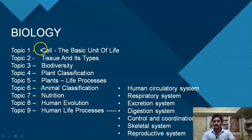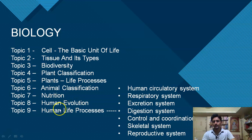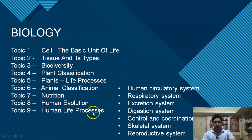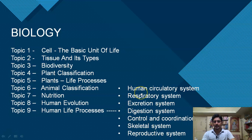Now let us talk about biology. We can start from the basics — the study of cell — followed by tissues and its types, then biodiversity, plant classification, basic botany, life process of the plant, animal classification, nutrition, human evolution, and human life processes. Human life processes is the most important chapter, which you should revise again and again. It contains the human circulatory system, respiratory system, excretion system, digestion system, control and coordination, skeletal system, and reproductive system. These are always high-yielding topics and questions are always asked on them.